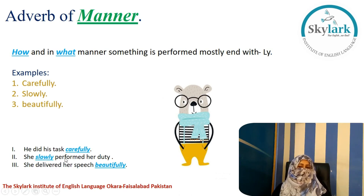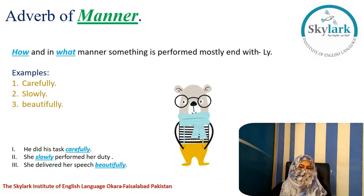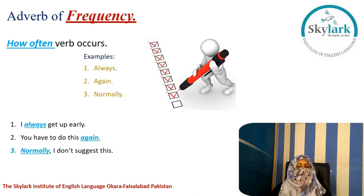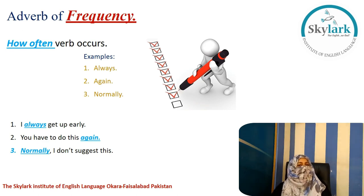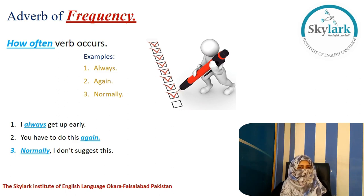Moving on: adverb of frequency tells us how often a verb or action occurs. Examples: always, again, normally. Sentences: 'I always get up early,' 'You have to do this again,' 'Normally I don't suggest this.' The position of the adverb in the sentence — and how it increases sentence length — is something we are observing here with the help of this part of speech.